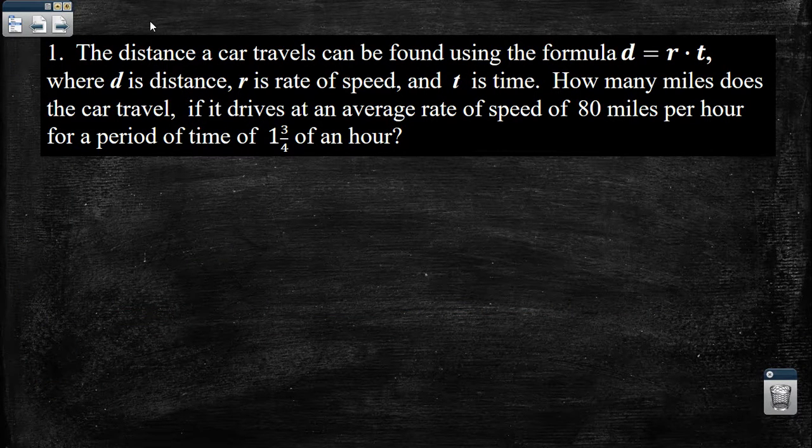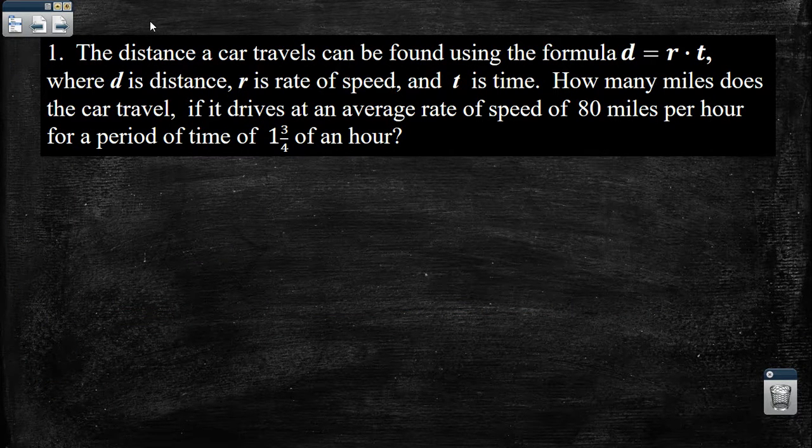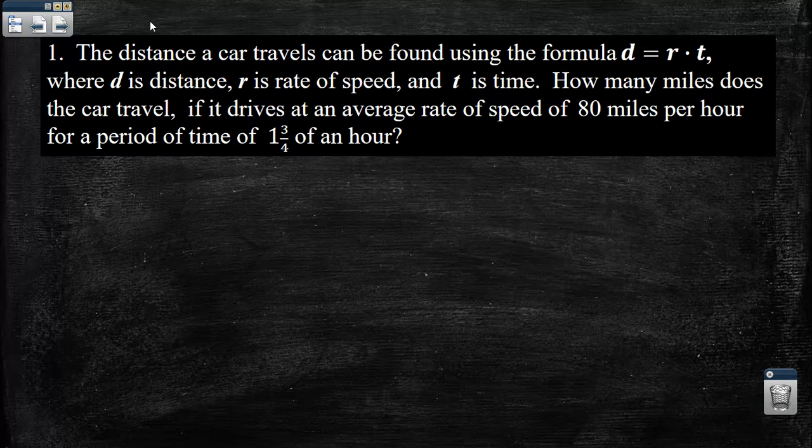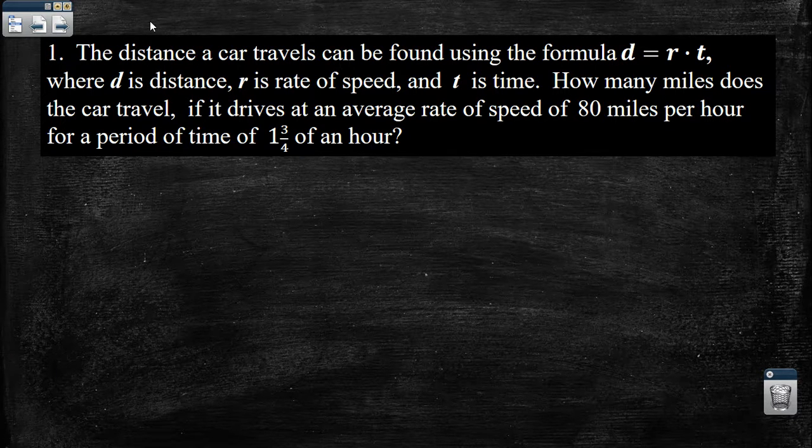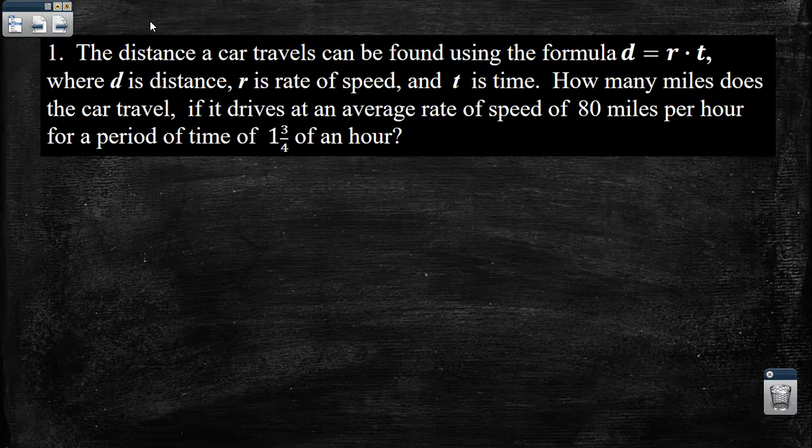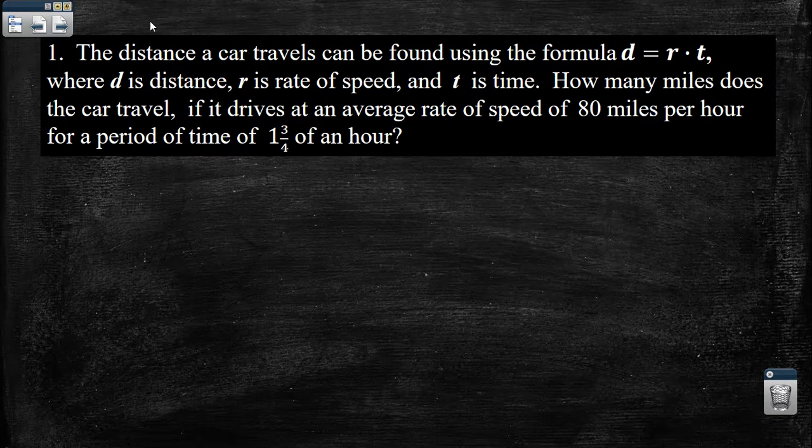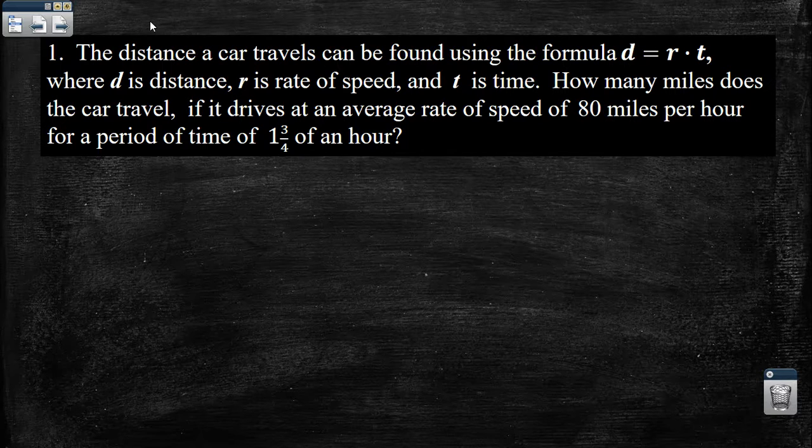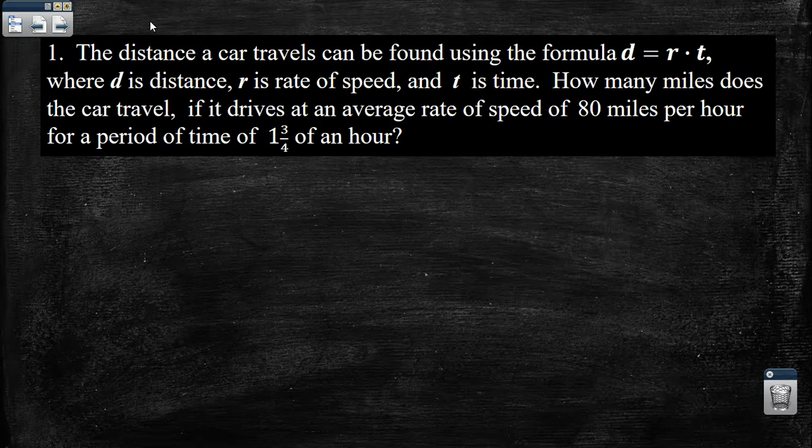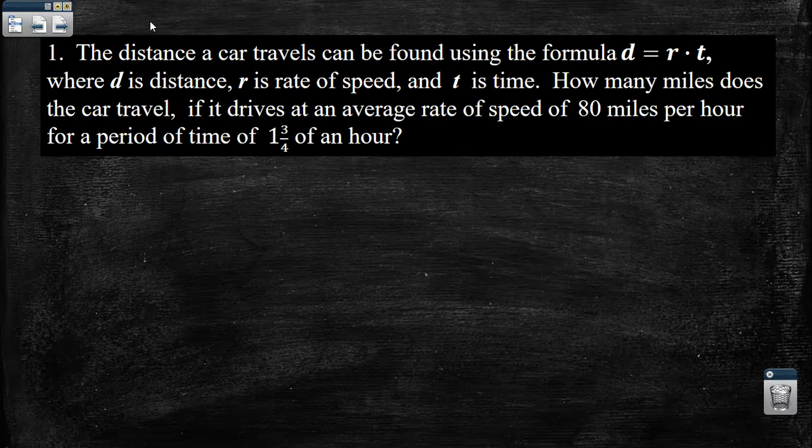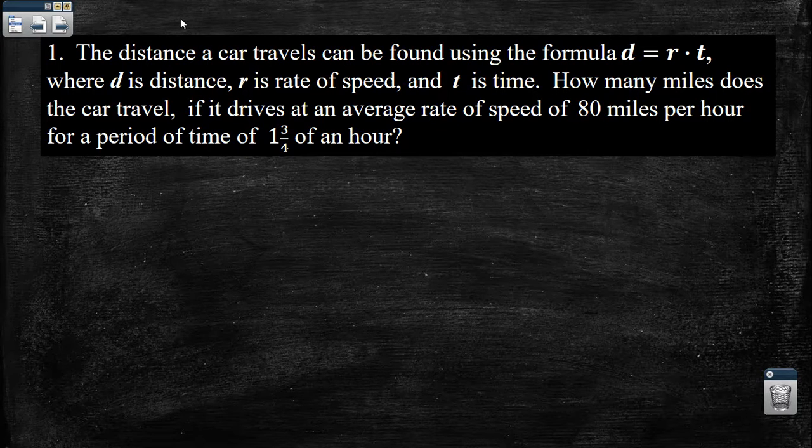The distance a car travels can be found using the formula D equals R times T, where D is the distance and R is the rate of speed and T is the time. How many miles does the car travel if it drives at an average rate of speed of 80 miles per hour for a period of 1 and 3 fourths of an hour?